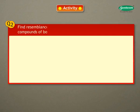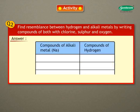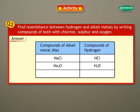Question 2: Find the resemblance between hydrogen and alkali metals by writing compounds of both with chlorine, sulfur, and oxygen. Answer: The table shows that hydrogen combines with chlorine, sulfur, and oxygen to form compounds having similar formulae.